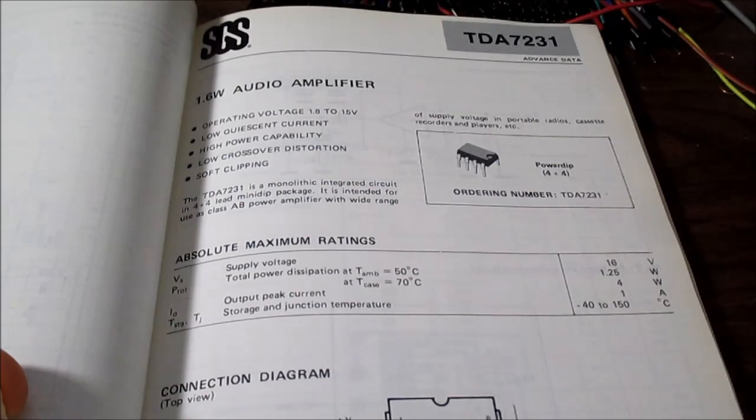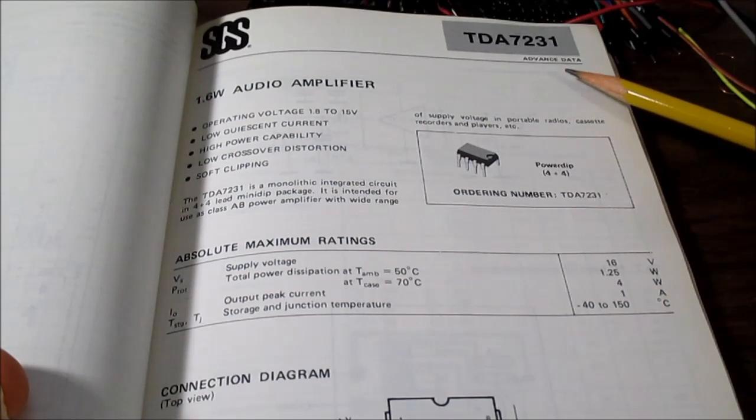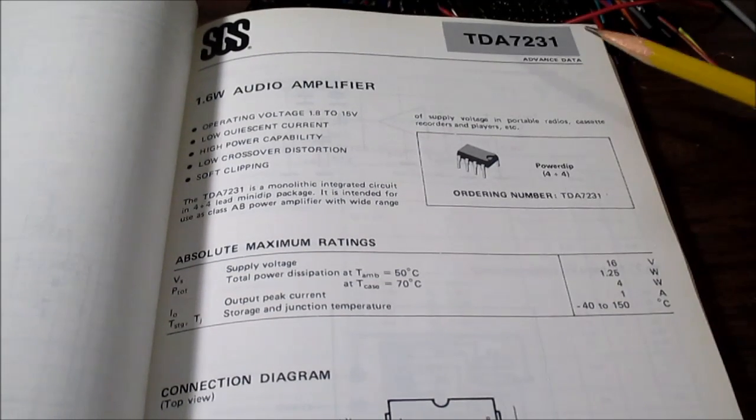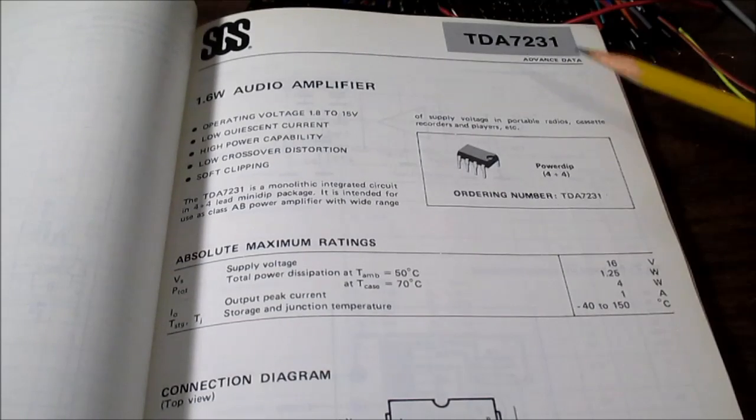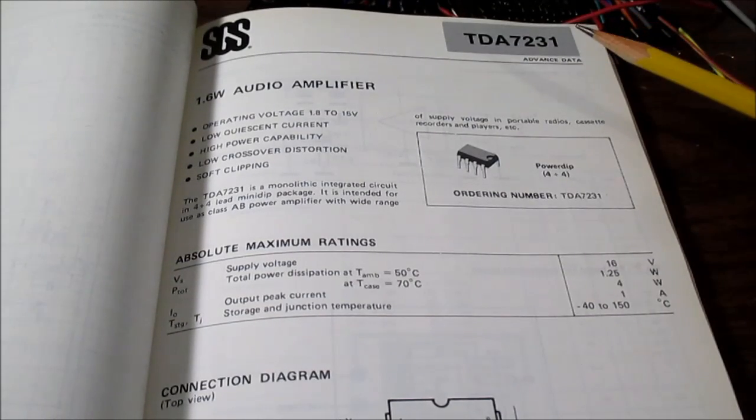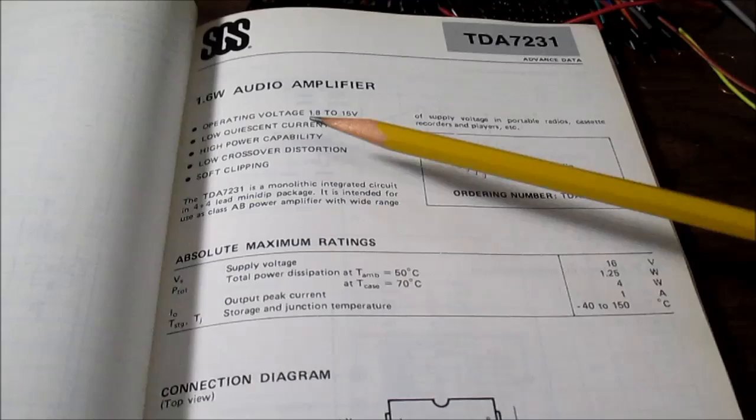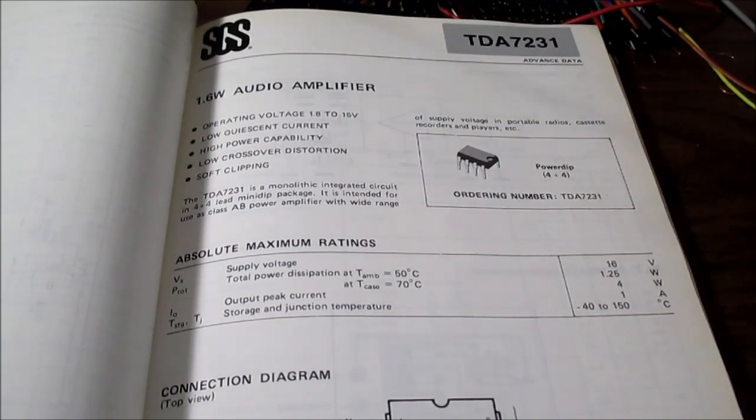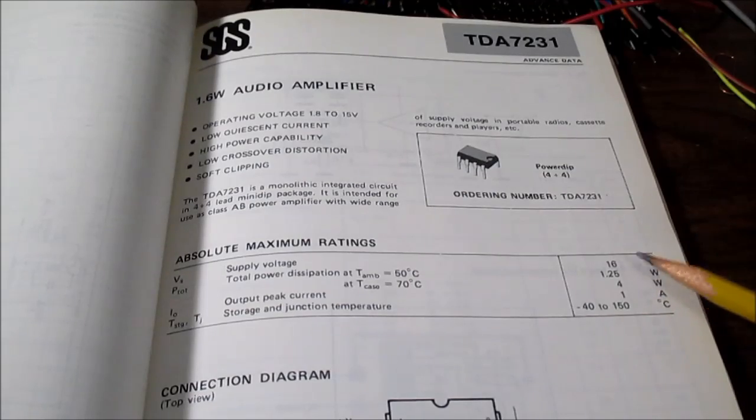TDA7231. It says advanced data. That means that the chip was not actually released yet. This is just advanced information for the designer who might want to use this chip. And look at this, it operates from 1.8 to 15 volts, 16 volts absolute maximum.